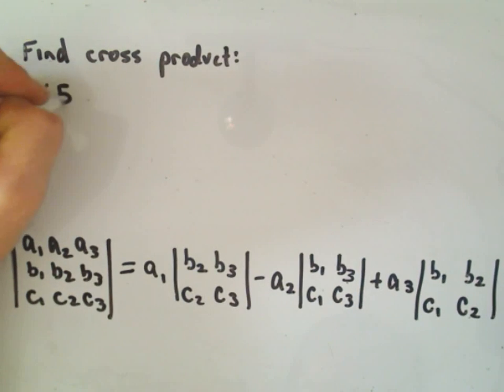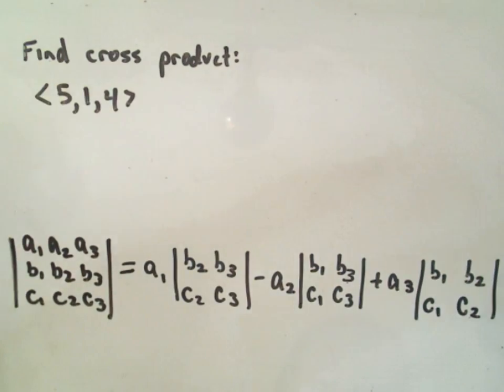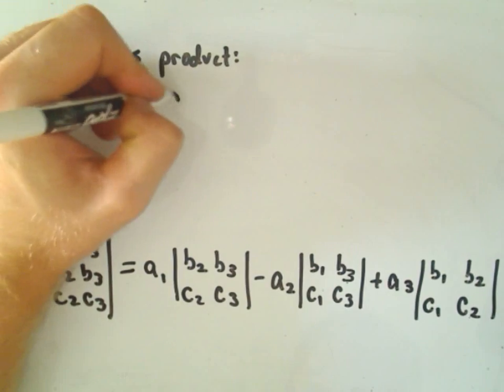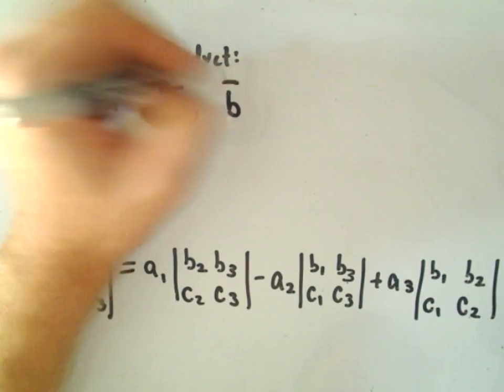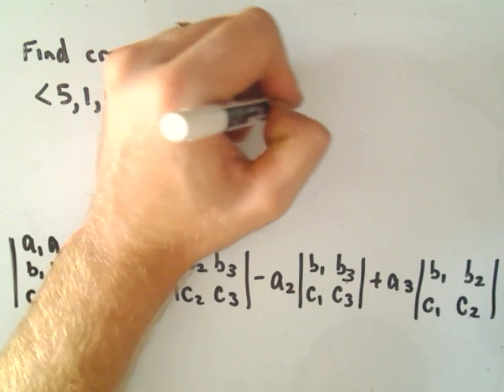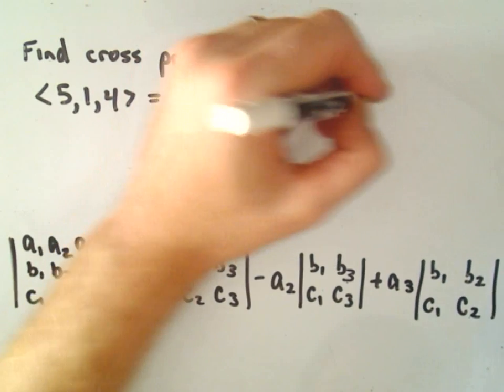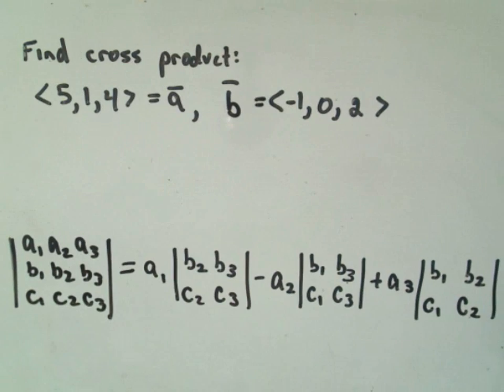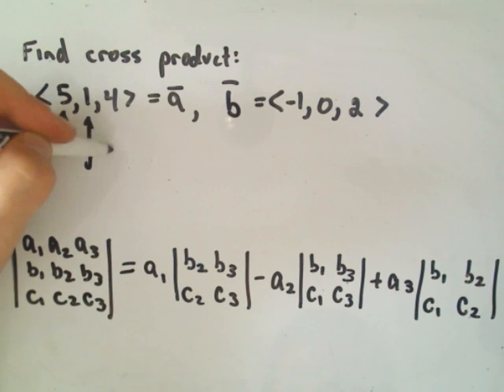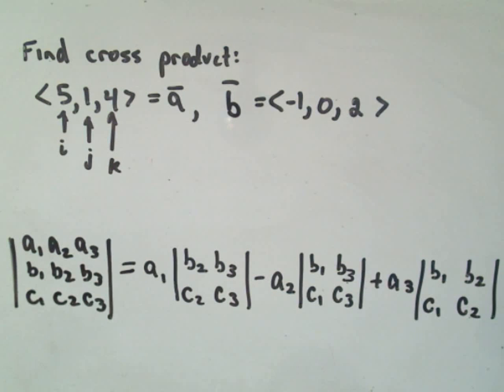Okay, so we're going to find the cross product of the vectors. How about 5, 1, 4, that'll be the components of the first vector. That'll be vector A. And then vector B will have components. Okay, so remember the first component is what we call the I component. The second is what we call the J component. And then the K component.